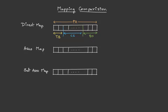Coming to associative mapping, again the initial few bits will be the block offset and the rest of the bits are taken as the tag bits. Now coming to set associative mapping, again the first few bits will be the block offset, the next few bits will be the set index, and the remaining are the tag bits.